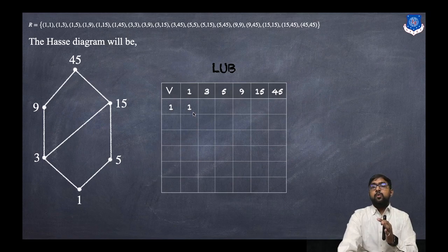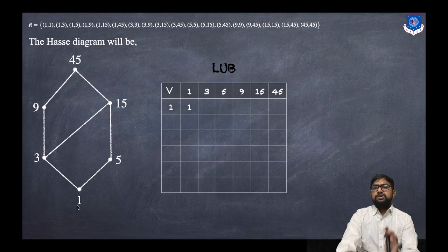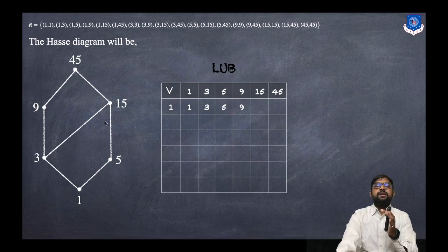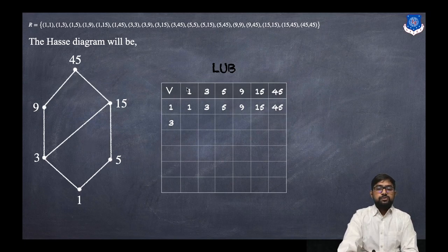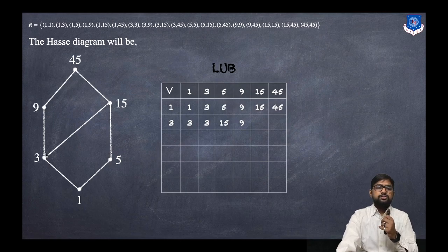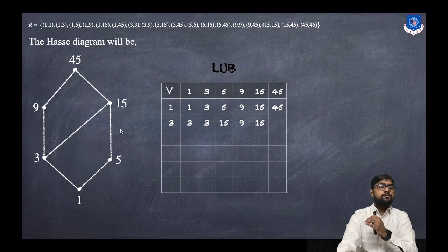LUB(1,1)=1, LUB(1,3)=3, LUB(1,5)=5, LUB(1,9)=9, LUB(1,15)=15, LUB(1,45)=45. Then for 3: LUB(3,1)=3, LUB(3,3)=3, LUB(3,5)=15, LUB(3,9)=9, LUB(3,15)=15, LUB(3,45)=45.